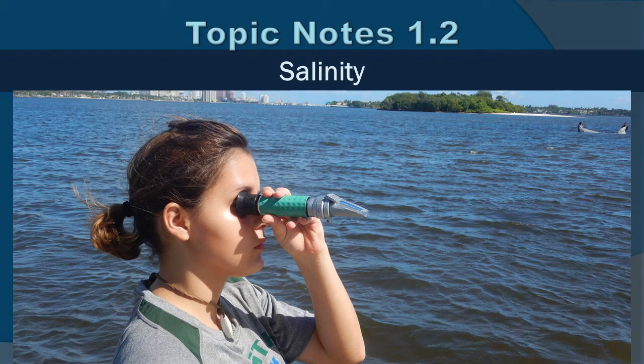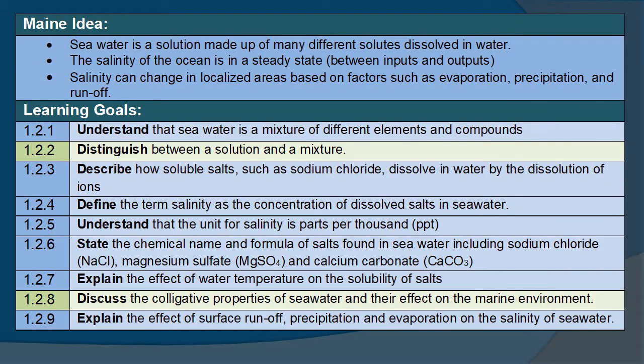Topic notes 1.2 on salinity. Now that we have a grasp of chemistry, it's time to get into the salinity of seawater. This student is actually measuring salinity using a refractometer, which we'll talk about in a little bit. The main ideas to focus on: seawater is a solution made up of many different solutes dissolved in water, and the salinity of the ocean is a steady state between inputs and outputs. Salinity can change in localized areas based on factors such as evaporation, precipitation, and runoff.